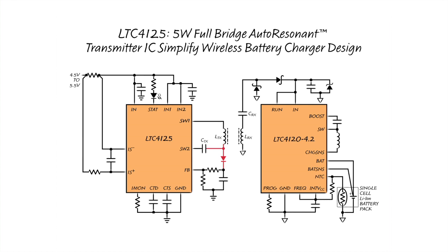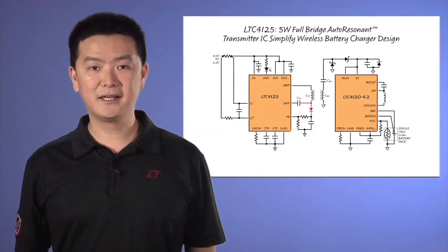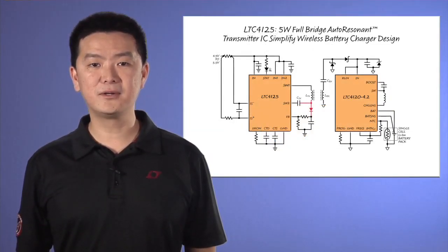The LTC4125 comes with all the features necessary for a simple, powerful, and safe wireless power transmitter circuit. In particular, it has the ability to adjust its output power depending on the receiver load requirement, as well as to detect the presence of a conductive foreign object.